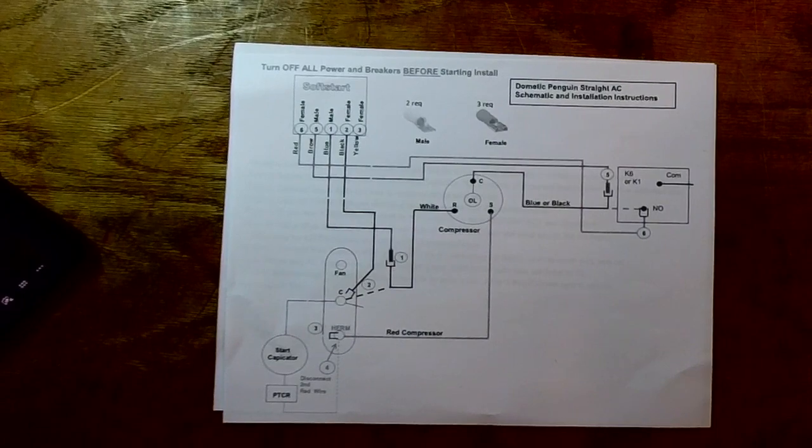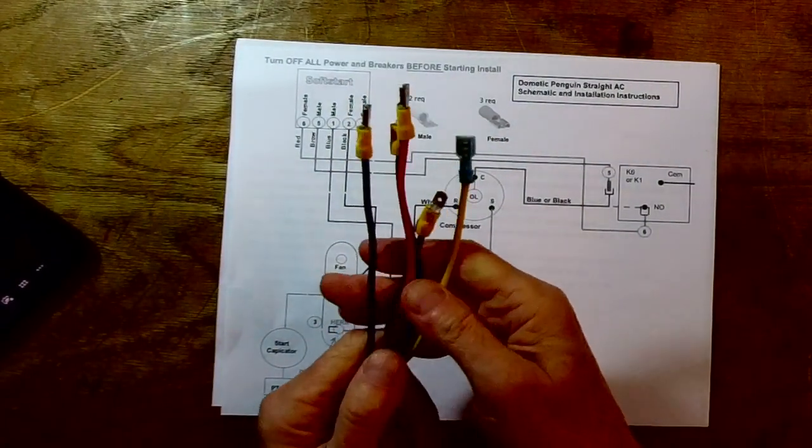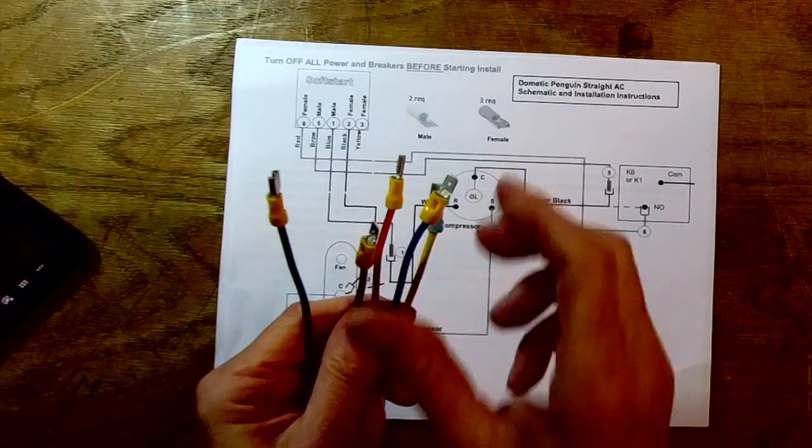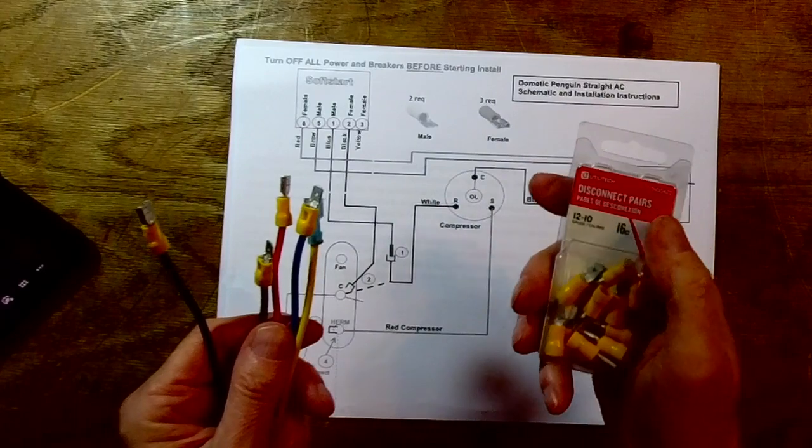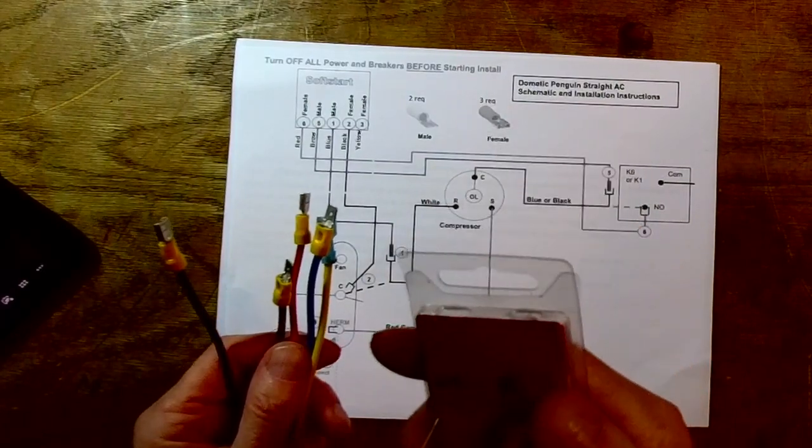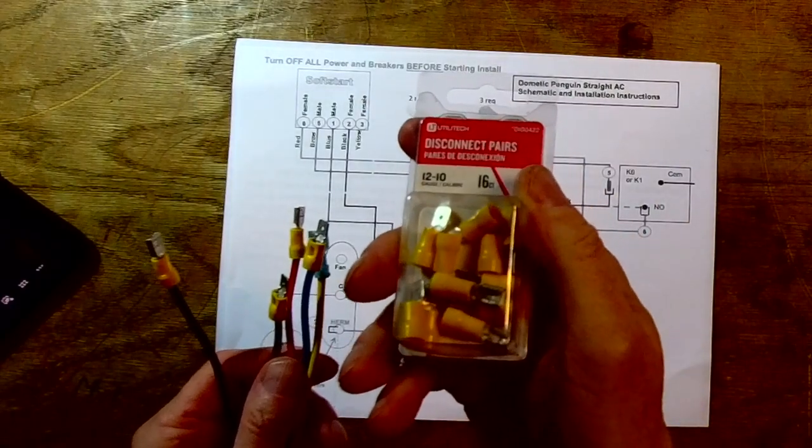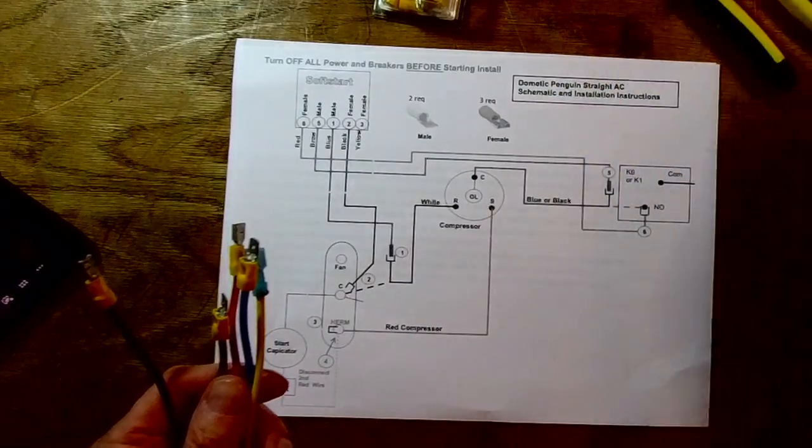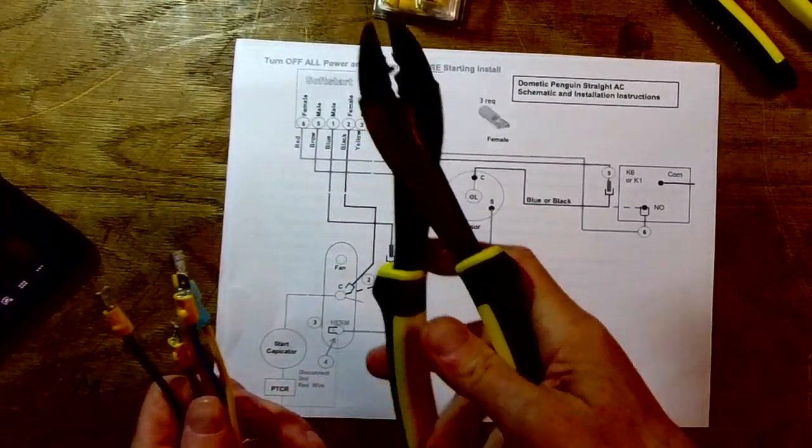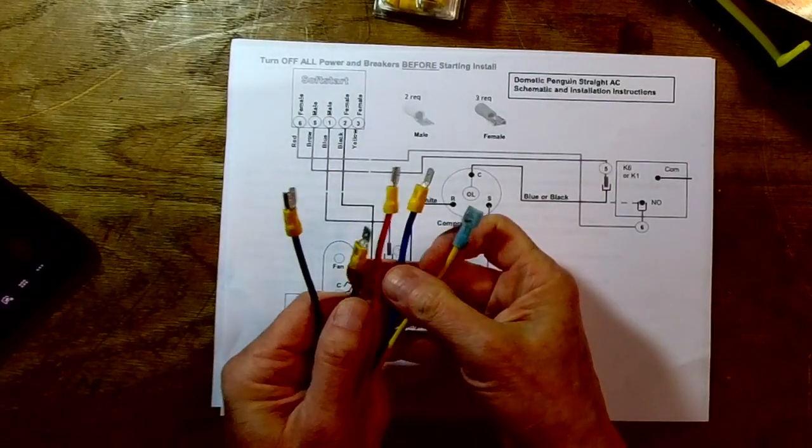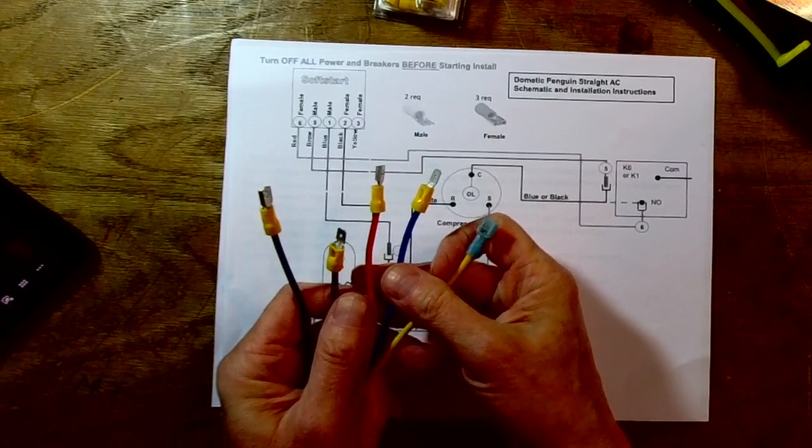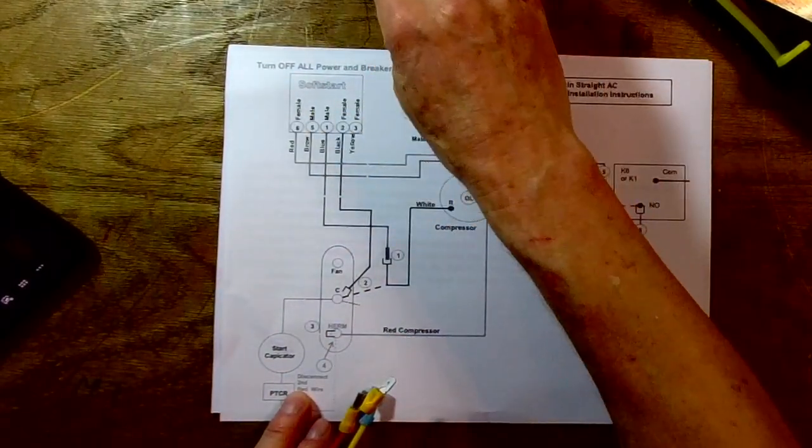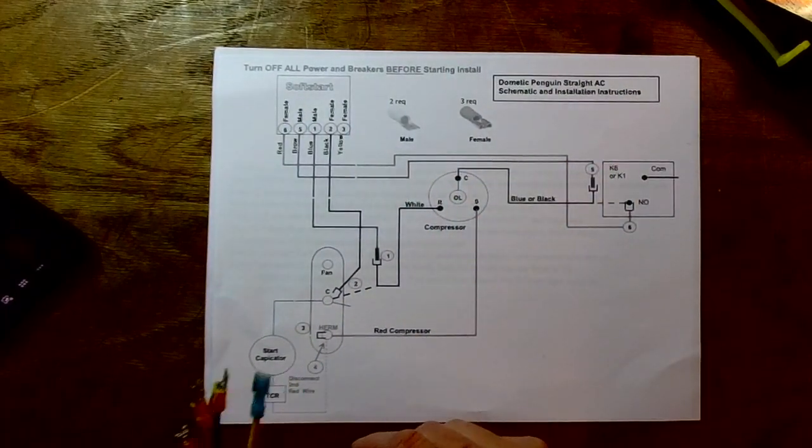Right now, you don't want to do this on the roof of your RV if you can avoid it. I would recommend doing this on your bench or table, not too hard to do. These little Utilitech 12 to 10 gauge 16 count are perfect for this. I walked into Lowe's and got it for three and a half bucks. It's always good to have a nice pair of diagonal cutters and a crimper. You can do this with regular pliers, but a crimper makes a much better connection. Looks like we're all good to go. Next I'm going to take this outside and plug it into my air conditioner according to the diagram. See you in just a minute.